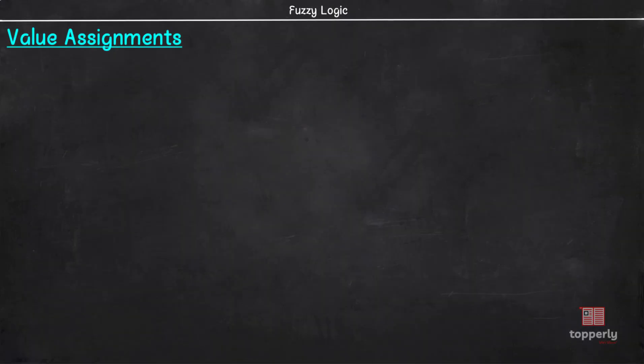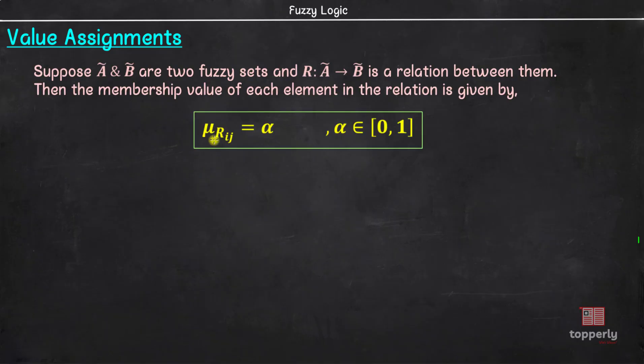We learned that relations define the connection between two or more fuzzy sets and the strength of these connections are expressed by membership values µRij, whose value constitutes the strength of connection between ith element of first set and jth element of another set in relation R. For simplicity, let us use Rij to represent the membership value µR. Now, the question is how do we obtain the value of this?